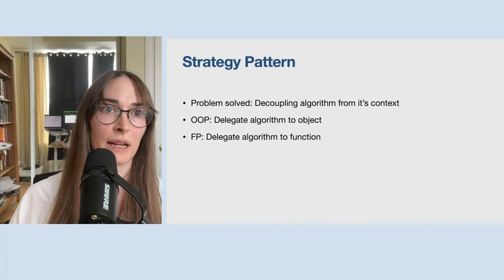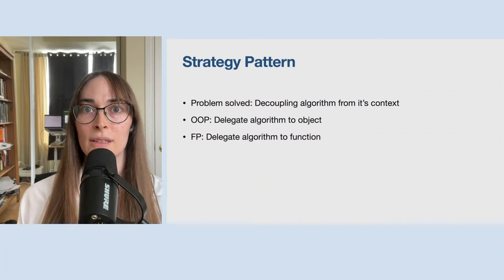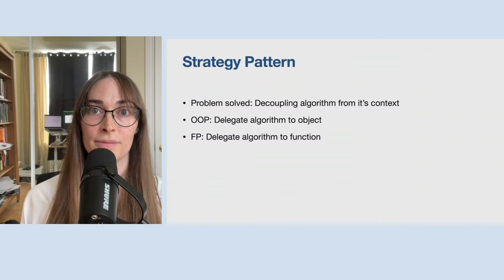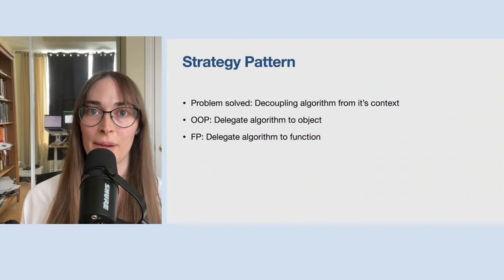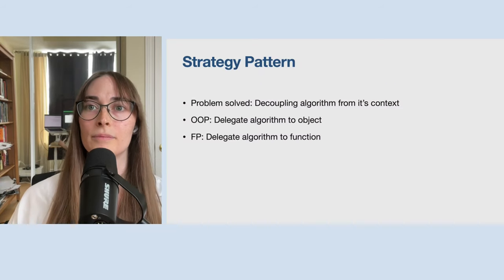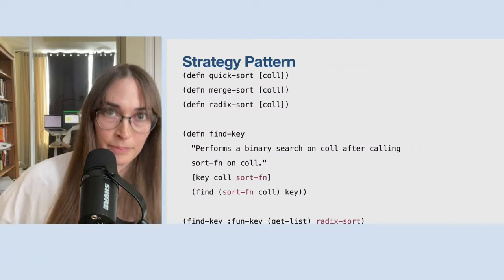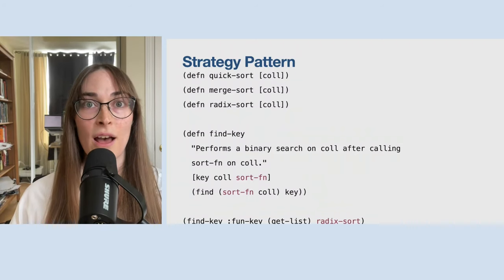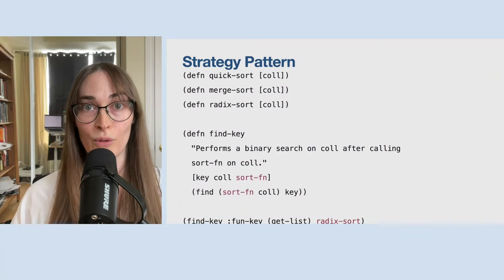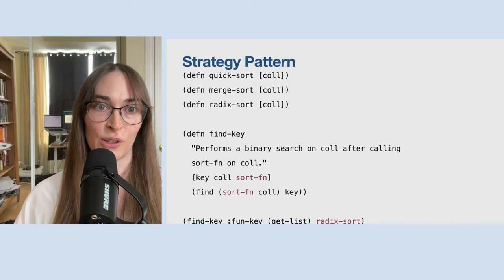The strategy pattern is a little less abstract. The problem being solved is decoupling an algorithm from its context. In object-oriented programming you use a delegate object — for example, choosing quicksort or mergesort. In functional programming we just have a callback function or close over the function we want. Here's some code based on the find function from Clojure core — you can see it takes the sort function and calls it. I didn't fill out quicksort or mergesort since I haven't been in a CS classroom in about 10 years, but you can imagine what those look like.